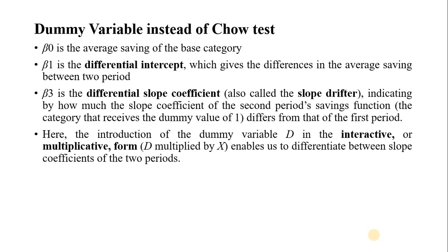This is the way we can use the dummy variable as an alternative to the Chow test to check structural stability. This is all about today's lecture, and tomorrow I will come with one more use of dummy variables. Thank you very much.